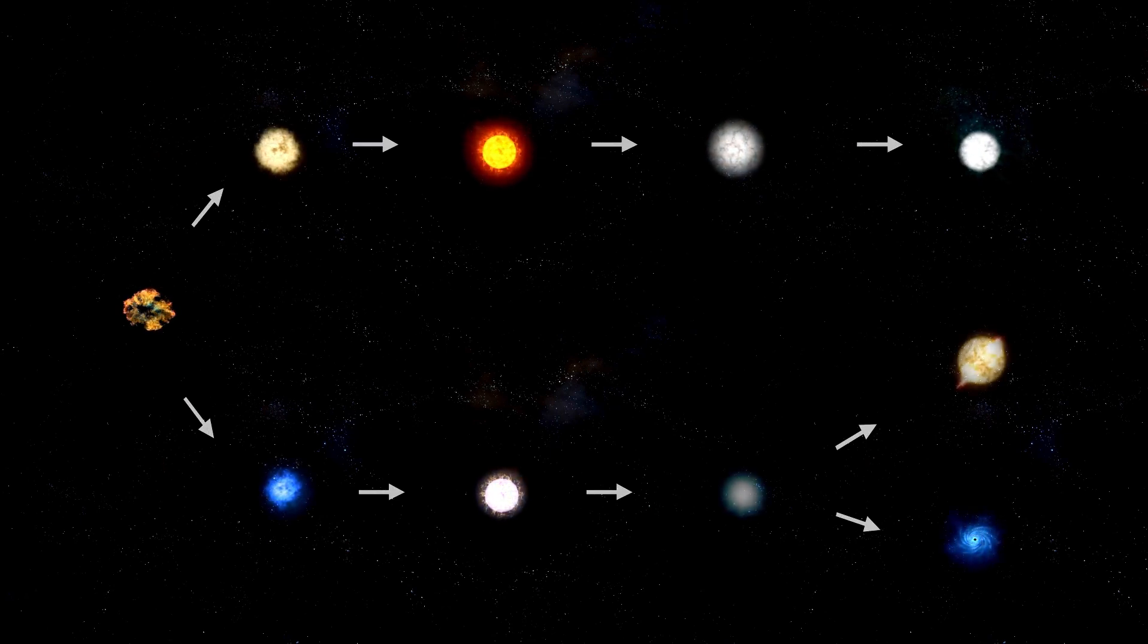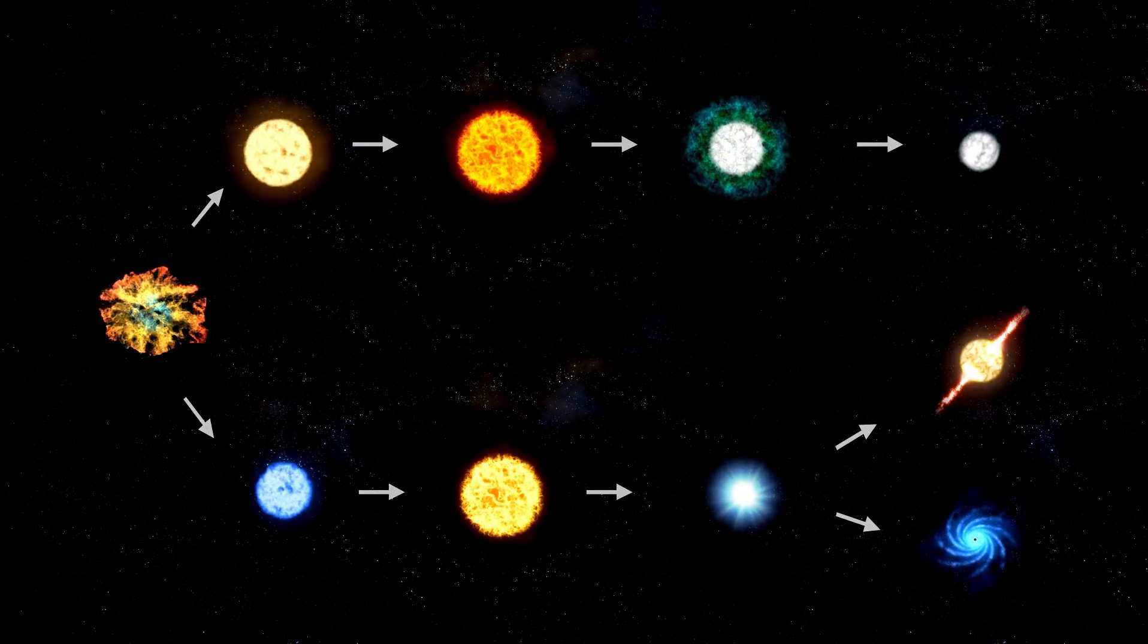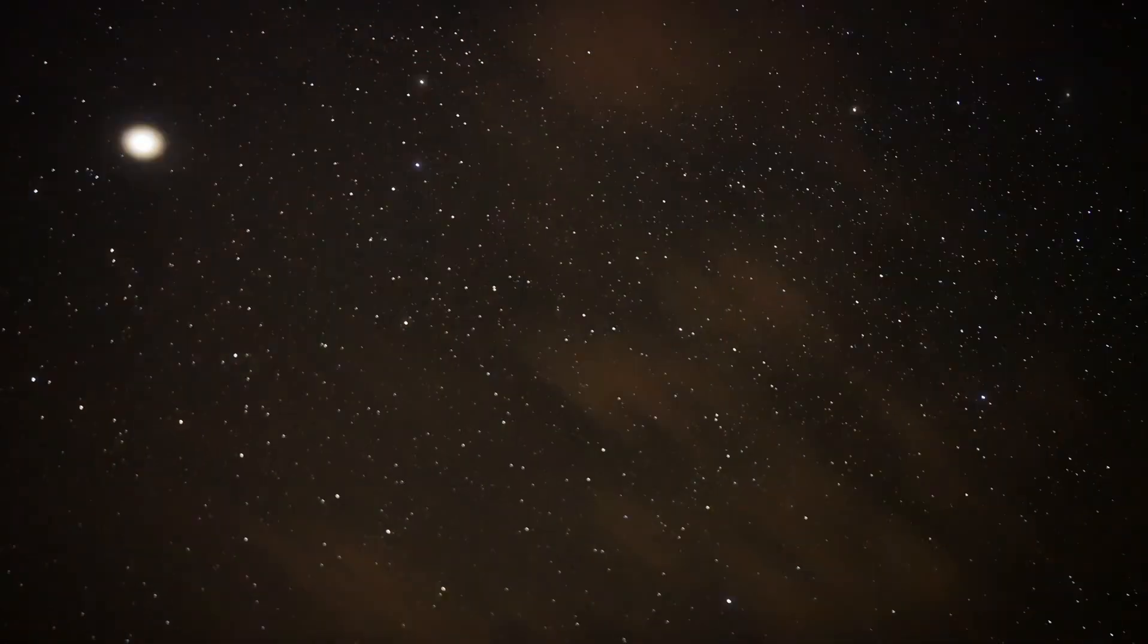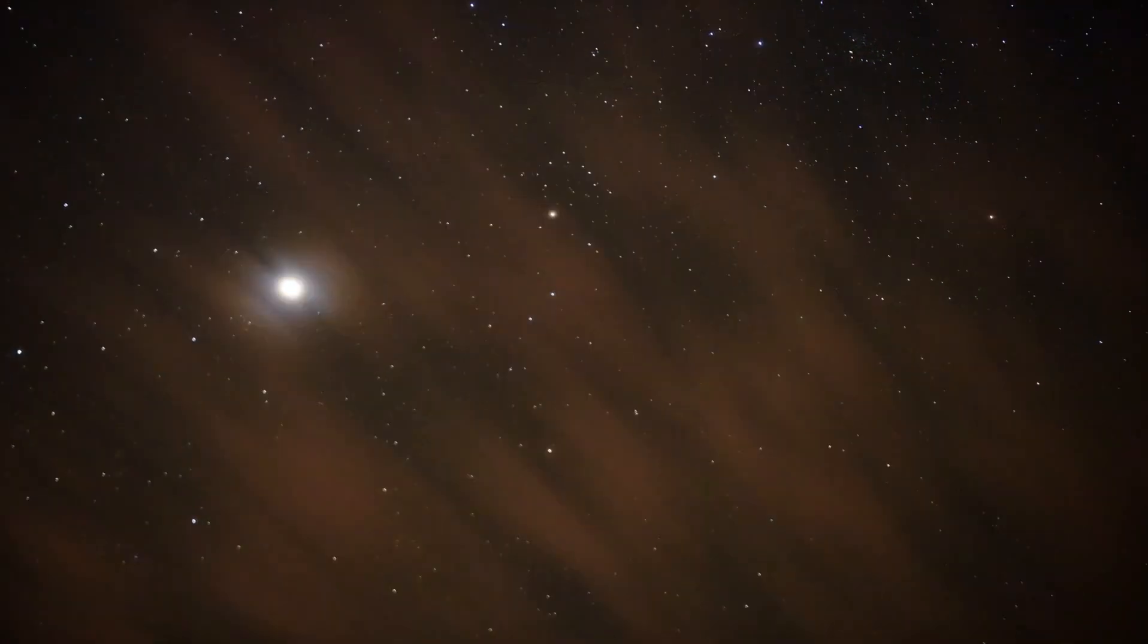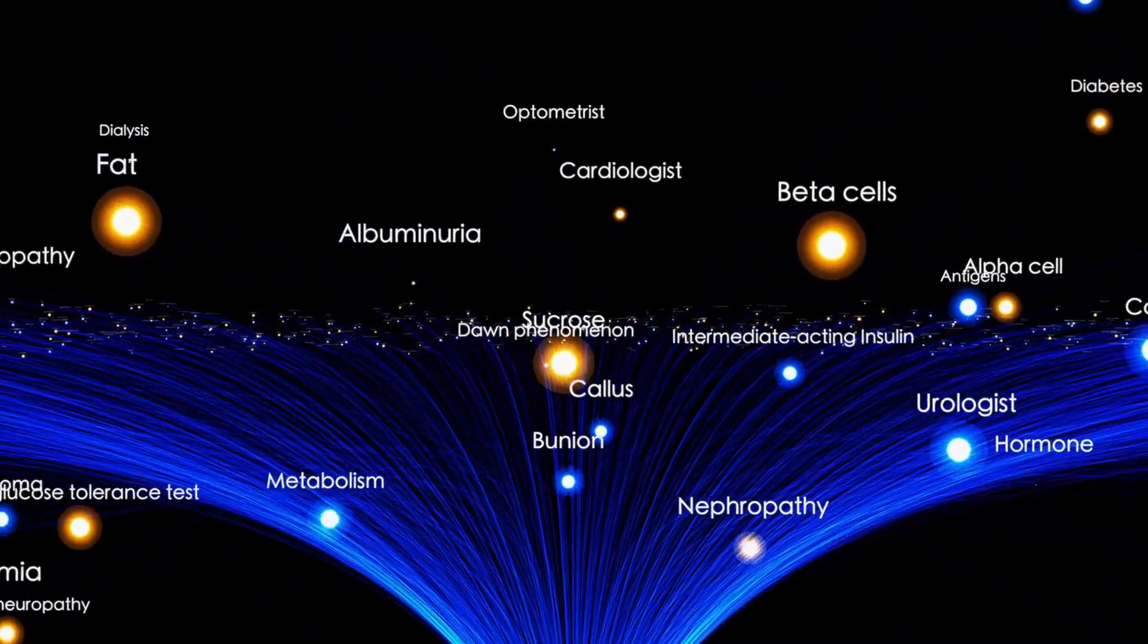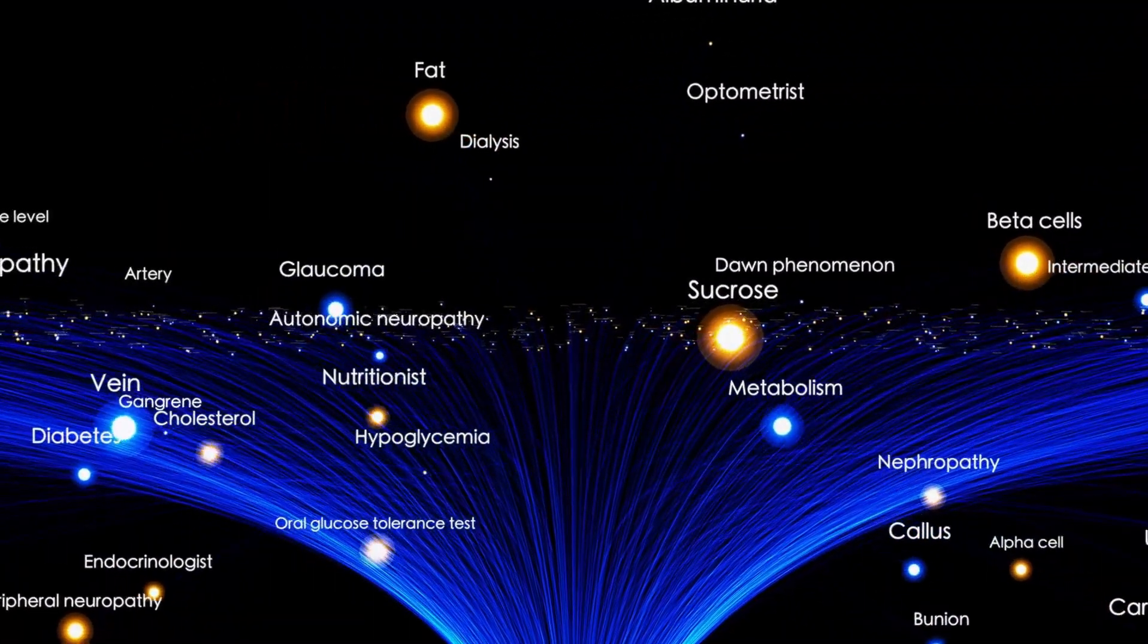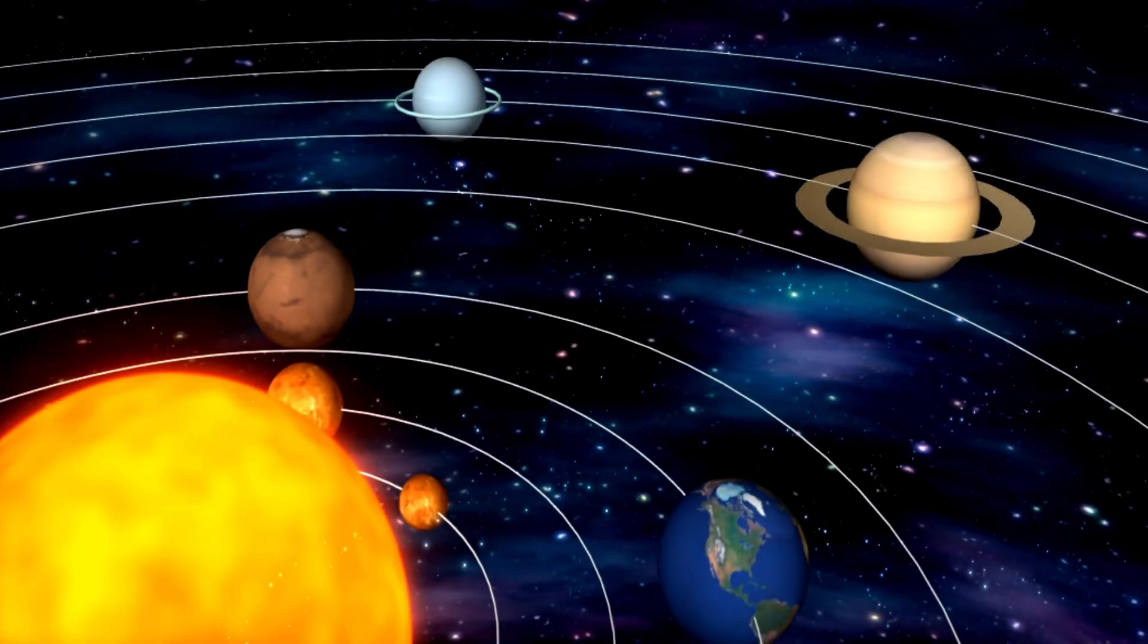Betelgeuse, long classified as a pulsating red supergiant, is a dynamic star whose brightness varies in cycles ranging from 10 to over 2,000 days. These variations reflect its rhythmic expansions and contractions, processes that are visible manifestations of its internal evolution. Its brightness can fluctuate dramatically, ranging from magnitude 5 to magnitude 0, creating a stark contrast with other stars.